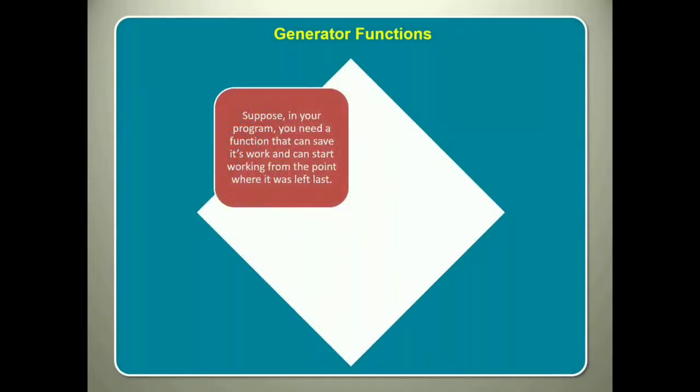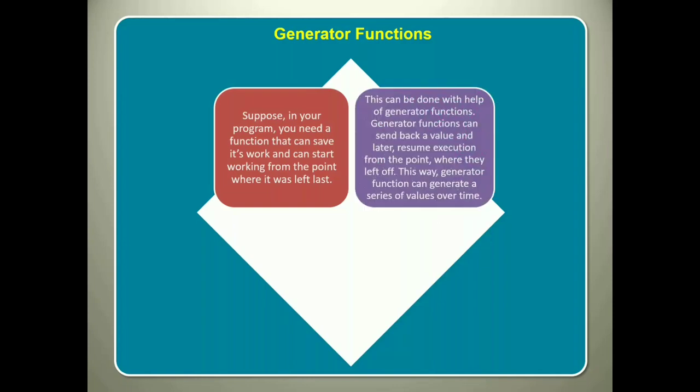Suppose in your program, you need a function that can save its work and can start working from the point where it was left last. You can do so with the help of generator functions. Generator functions can send back a value and later resume execution from the point where they left. This way, generator function can generate a series of values over time.